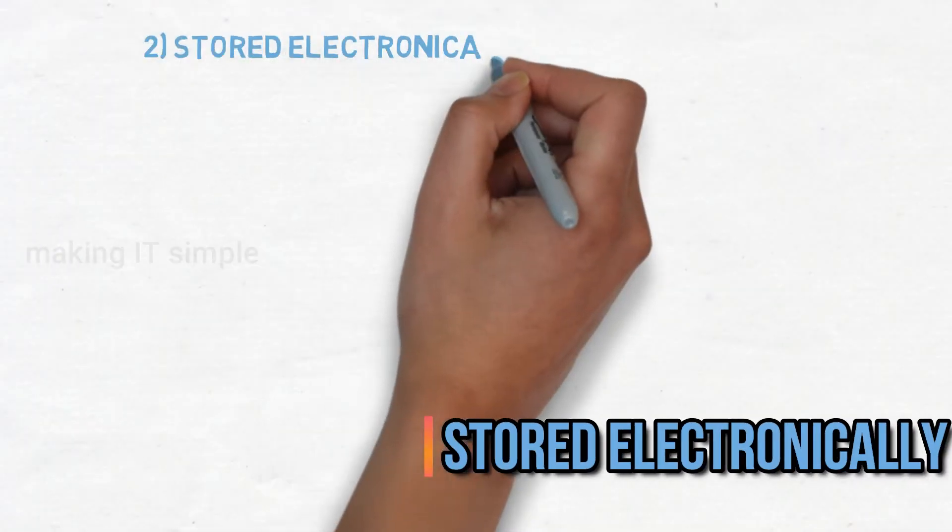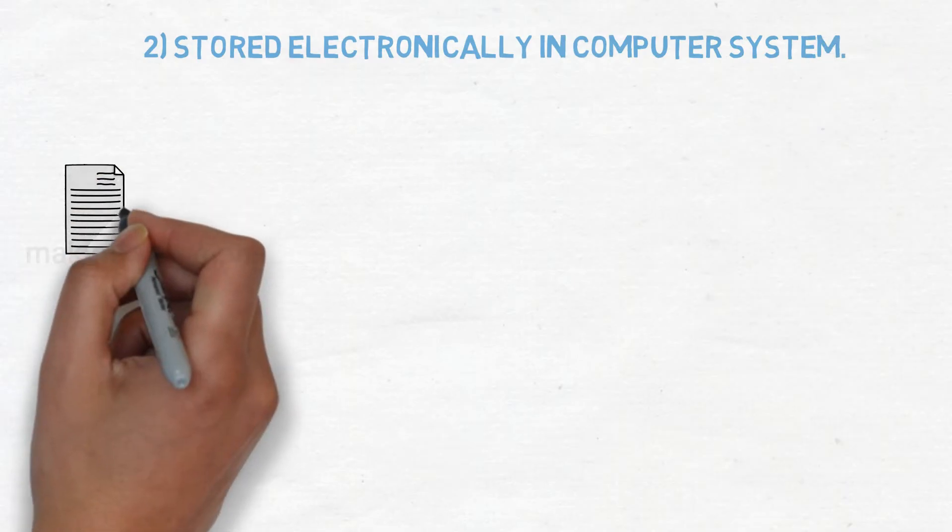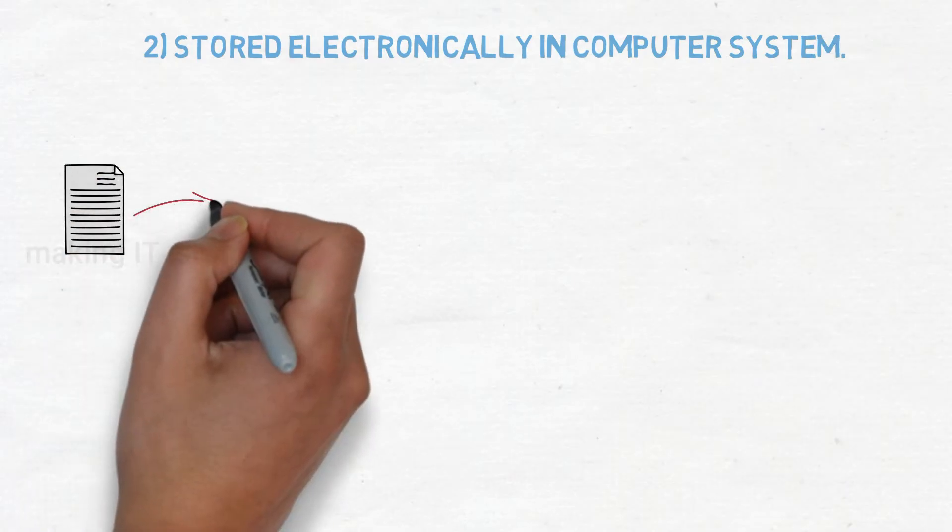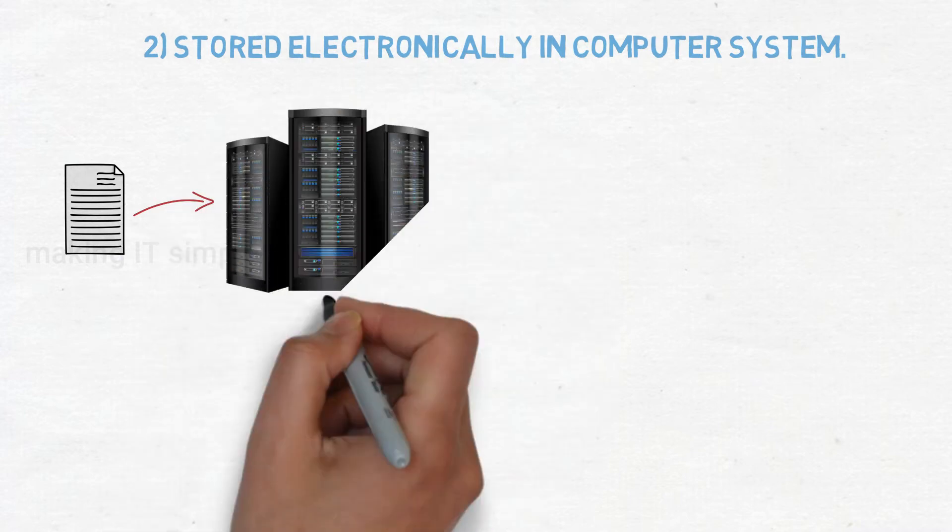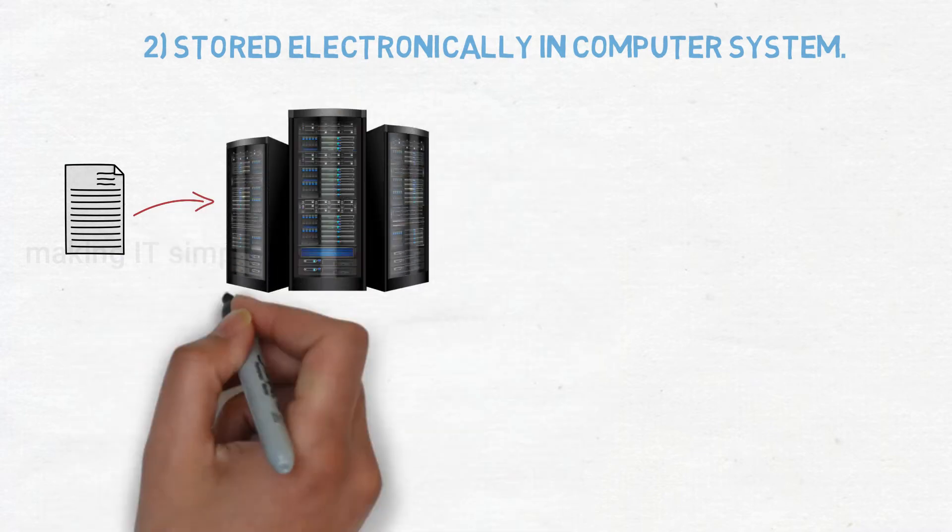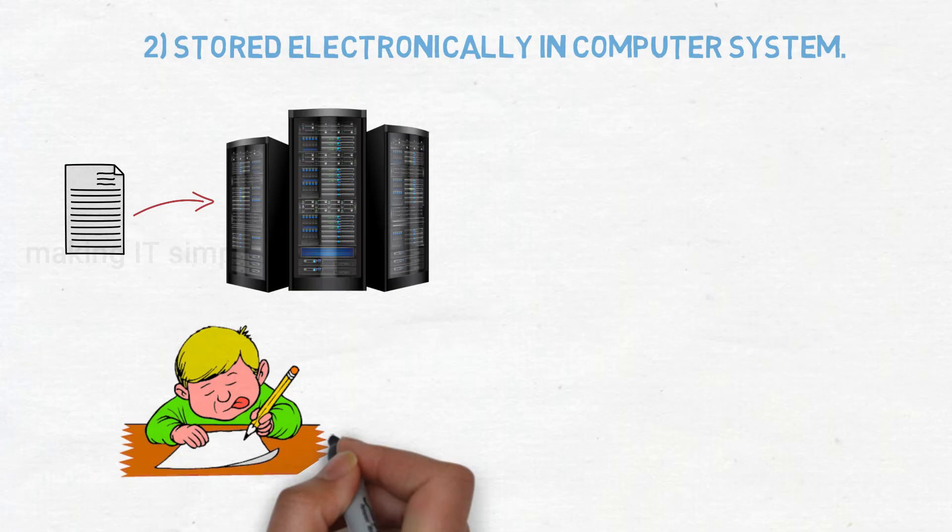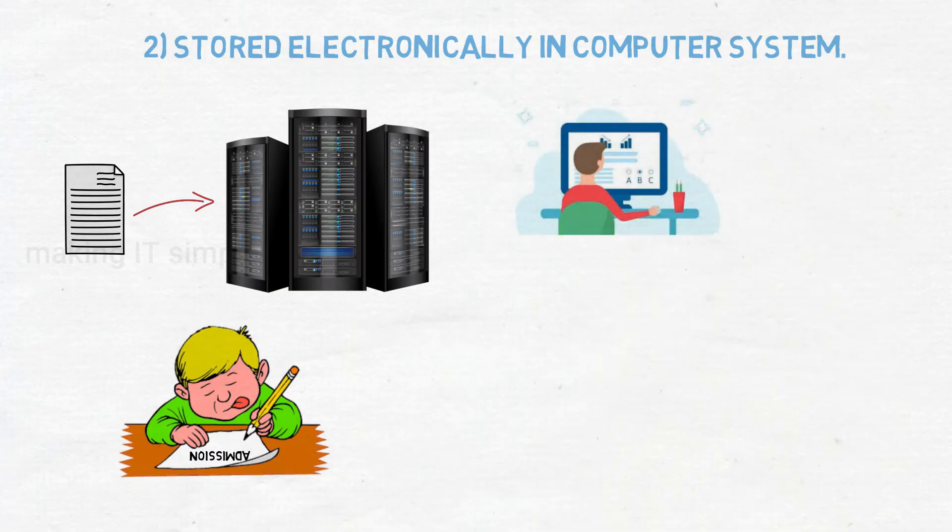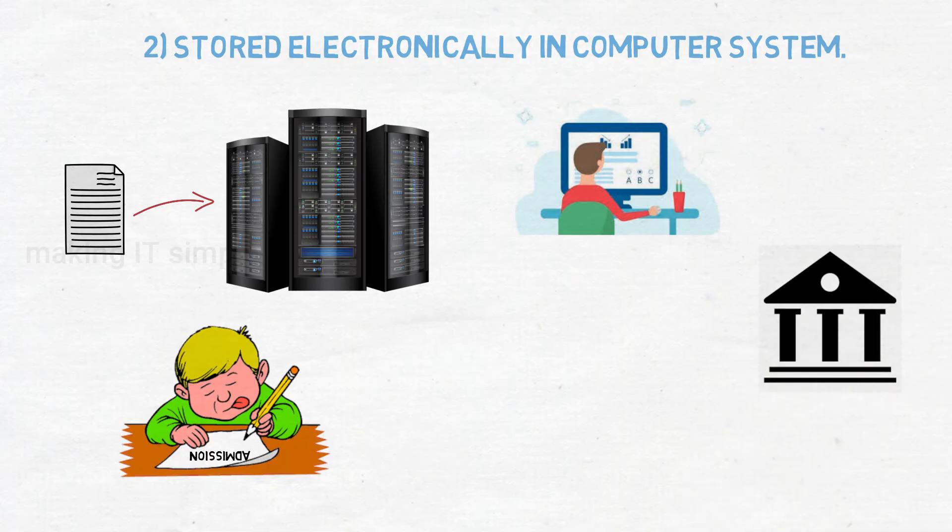Stored electronically in computer system. This means data is stored in computer system in electronic manner. It is stored in data servers. For example, before we had to fill a paper form and submit it by going to the college. Nowadays you need to fill an online form to apply in a college. That means your data filled in online form is stored electronically in college database.